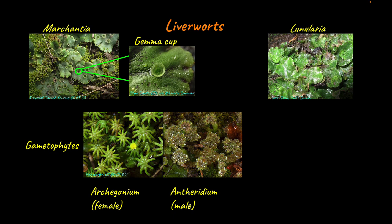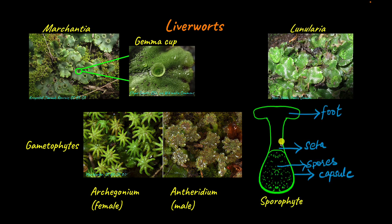The zygote develops into a structure called the sporophyte. The sporophyte has a foot which attaches it to the archegonium, and a capsule in which the cells undergo meiosis to form the haploid spores. The foot and the capsule are attached by a structure called a seta.